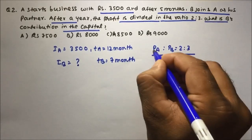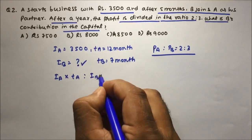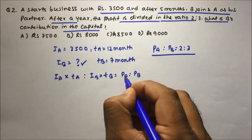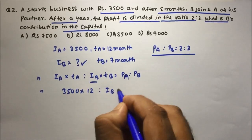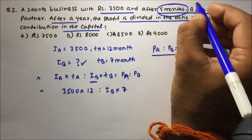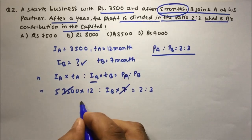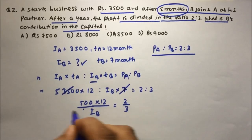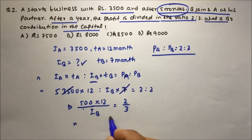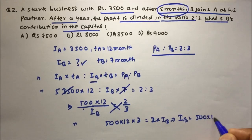We need to find B's investment. Using Investment × Time : Investment × Time = Profit Ratio: 3500 × 12 : Ib × 7 = 2 : 3. Dividing 3500 by 7 gives 500, so 500 × 12 : Ib = 2 : 3. Cross-multiplying: 500 × 12 × 3 = 2 × Ib, so Ib = (500 × 12 × 3) / 2.